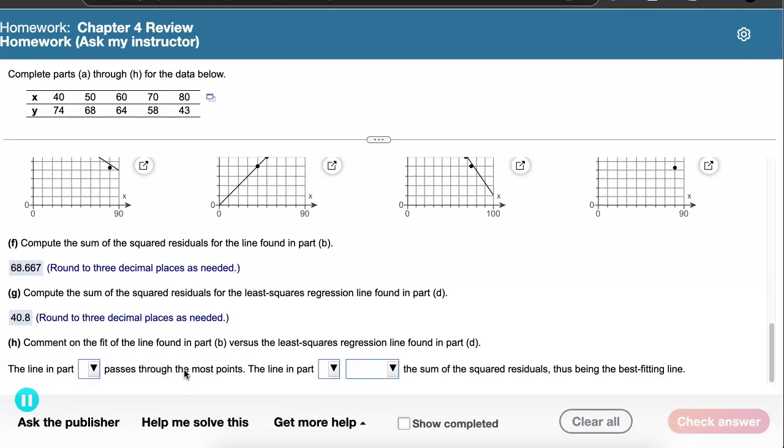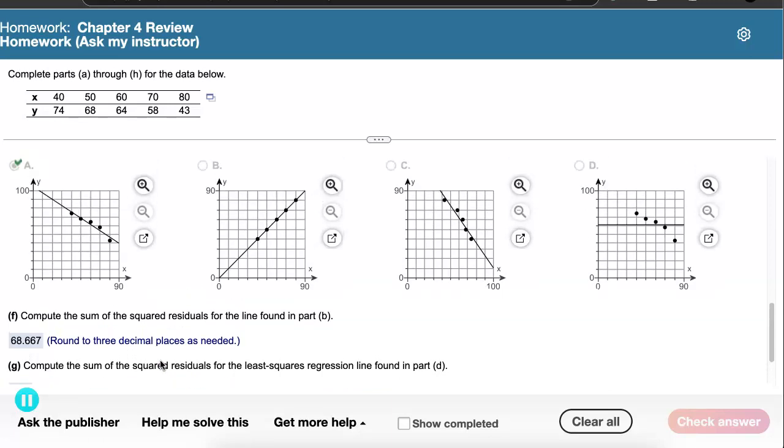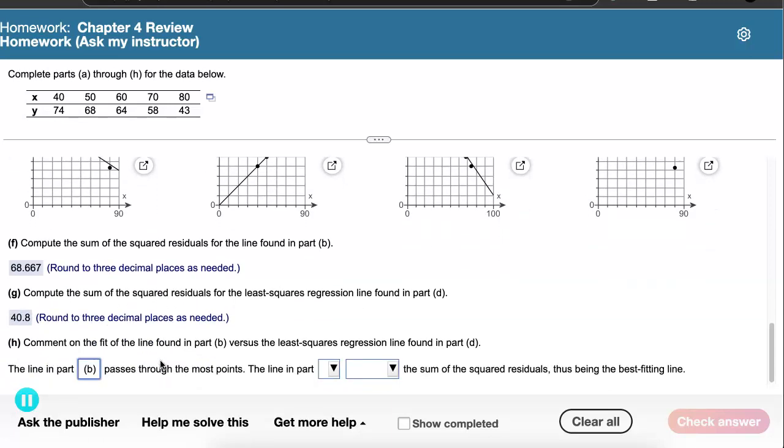This last part is just a statement of comparison between the two lines. The one that you found that you fit by hand through two points in part B versus the one that you found in part D where you ran the simple linear regression inside of StatCrunch. So the line that we found in part B actually passes through more points. It passes through two points. I'm not even sure that the line that we found in part D passed through any of the points. And that's not unusual for a simple linear regression or a least squared regression line. But the line that we found in part D will always minimize the sum of the squared residuals, thus being the best fitting line. Just like the name suggests, it is the least squared regression line. So it has minimized the sum of the squared residuals.